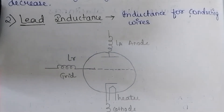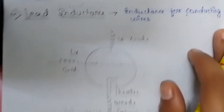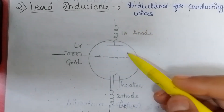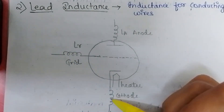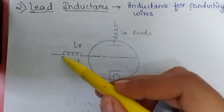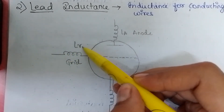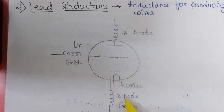The second limitation is lead inductance. Inductance for the conducting wires is known as lead inductance. As you can see in this diagram, this is a triode — also known as a conventional tube — and three inductors are added to the grid, anode, and cathode. The inductor added to the grid can be represented as L_r, the inductor at the anode as L_a, and the inductor at the cathode as L_k.